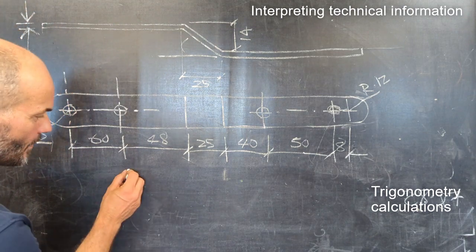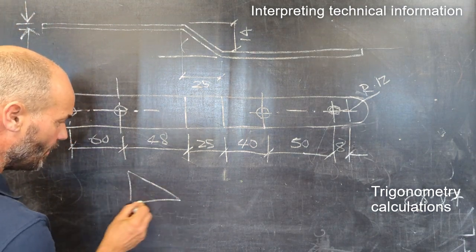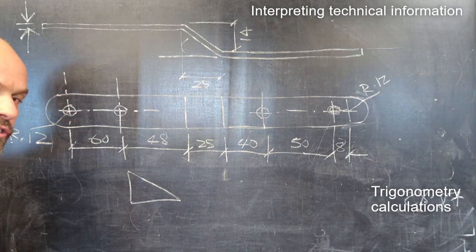So that diagonal forms a right angle triangle. Go to your math skills - you've got to use trigonometry.